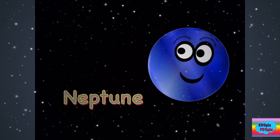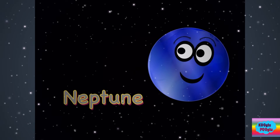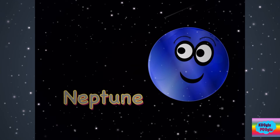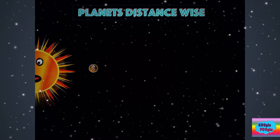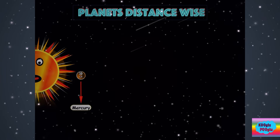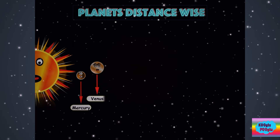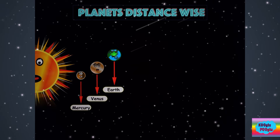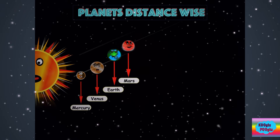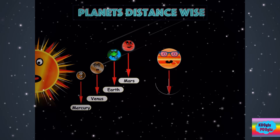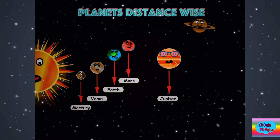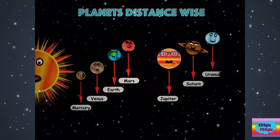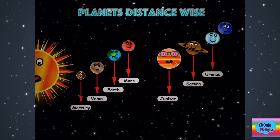Before we learn about our inner and outer planets, let's see our planets distance-wise from the sun. So here we have Mercury, Venus, Earth, Mars, and then we have Jupiter, then Saturn, then Uranus, and then Neptune.